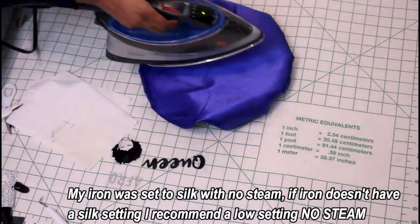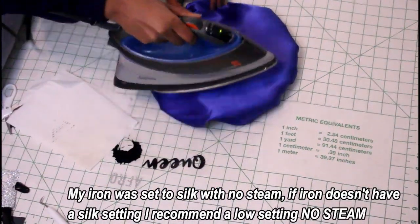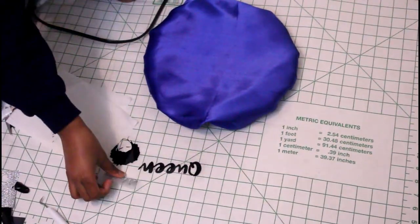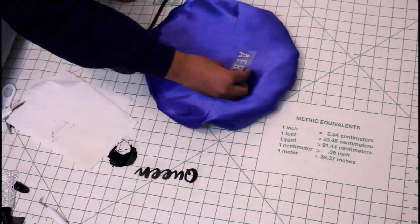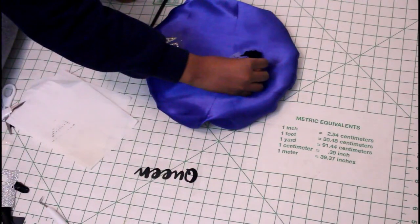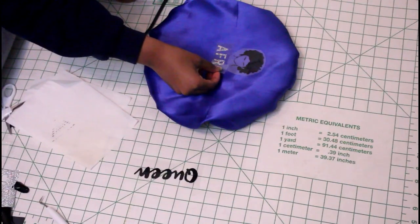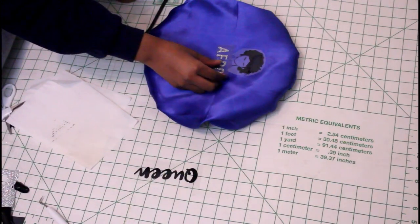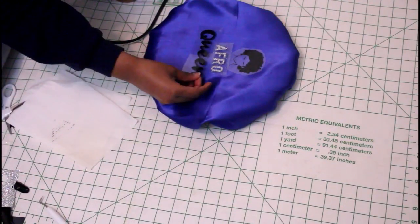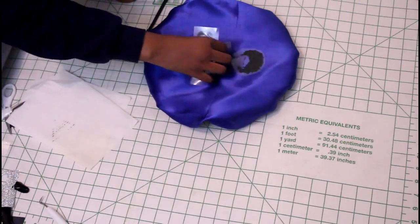My iron is set to silk and I made sure that I have it on no steam. If you do happen to leave your steam on, you may see yourself leaving bubbles inside of your heat transfer vinyl. When I use HTV on shirts, I typically use a ruler, especially if I have a large order to make sure everything is even and accurate as possible. But for this bonnet, I'm just simply eyeballing it. If you would like to use a ruler, you can. If not, then you can just eyeball it as well.